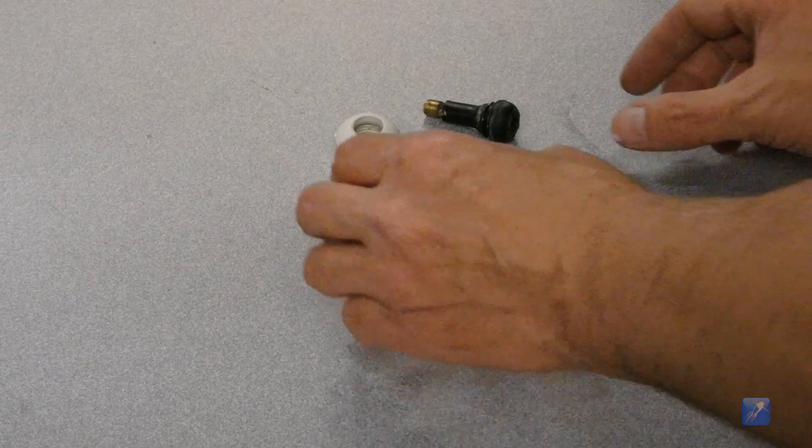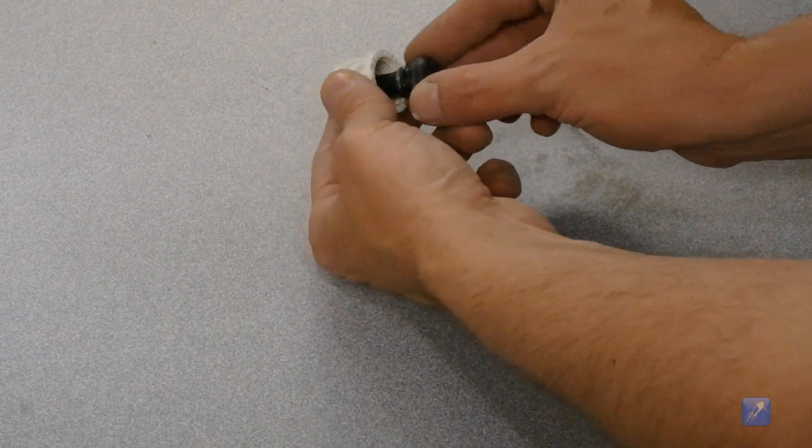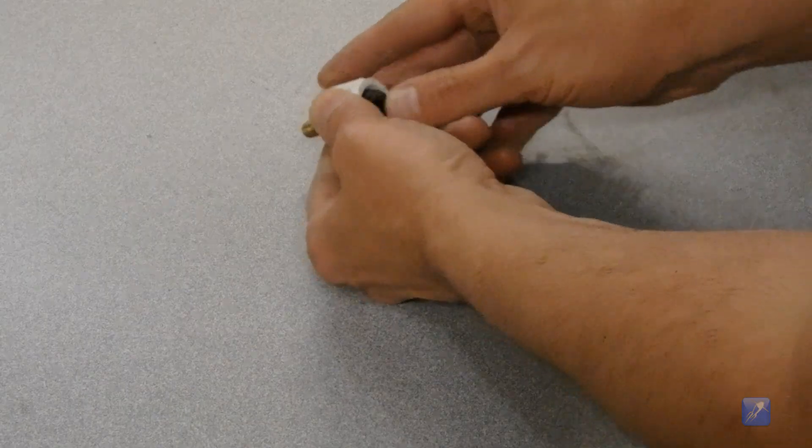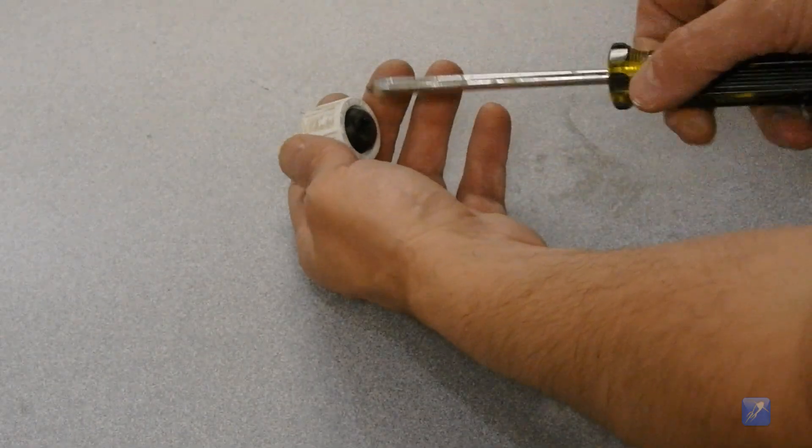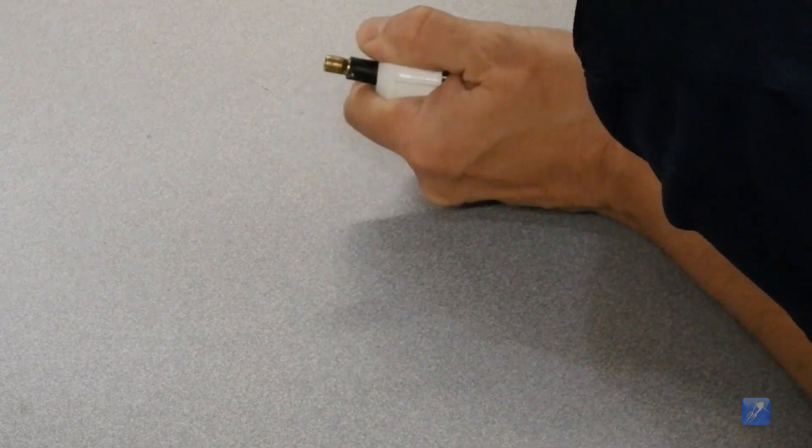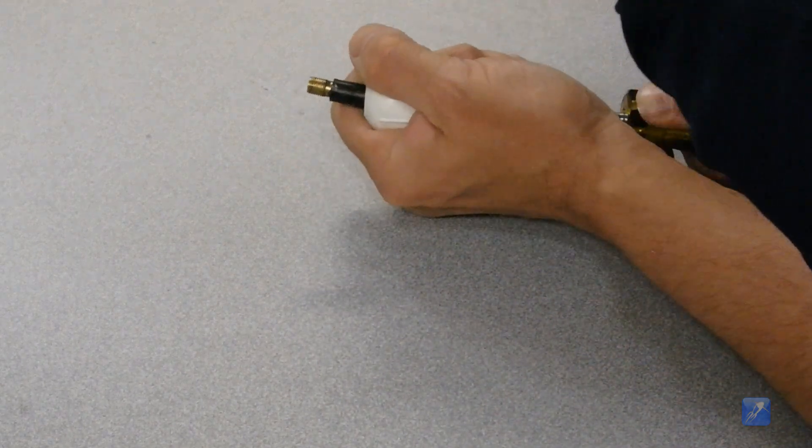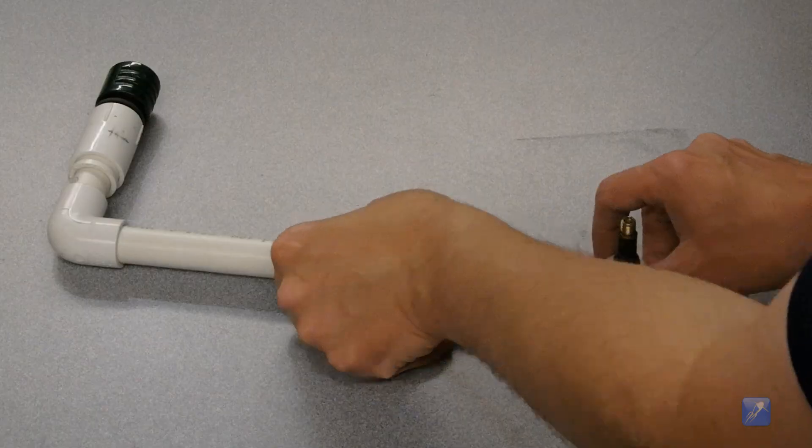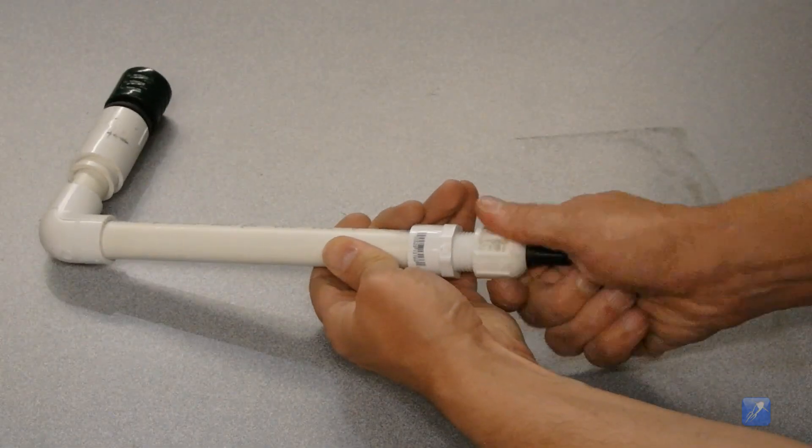You can now install the Schrader valve by pushing it through from the inside. The trick to installing the Schrader valve is to take a rod or a Phillips screwdriver and push it into the hole at the bottom of the Schrader valve and push it firmly from the inside out until it snaps in place. Then you can screw the cap onto your launcher.